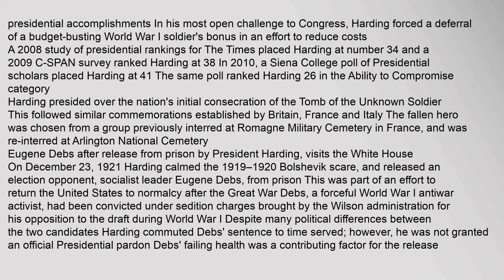Harding presided over the nation's initial consecration of the Tomb of the Unknown Soldier. The fallen hero was chosen from a group previously interred at Romaine Military Cemetery in France and was re-interred at Arlington National Cemetery. Harding calmed the 1919–1920 Bolshevik scare, and released an election opponent, Socialist leader Eugene Debs, from prison. This was part of an effort to return the United States to normalcy after the Great War.